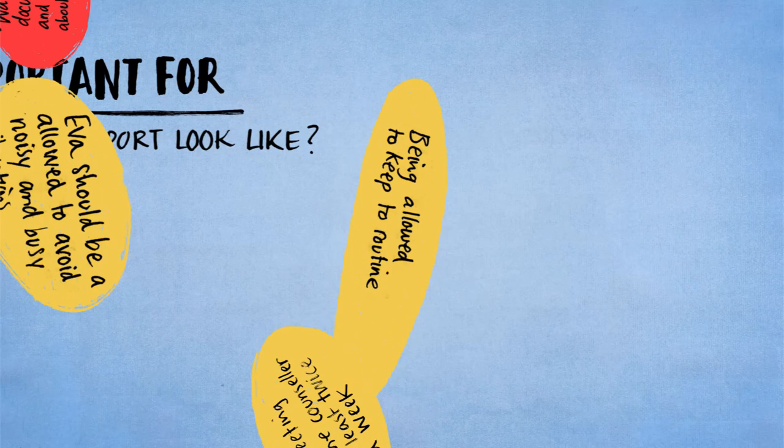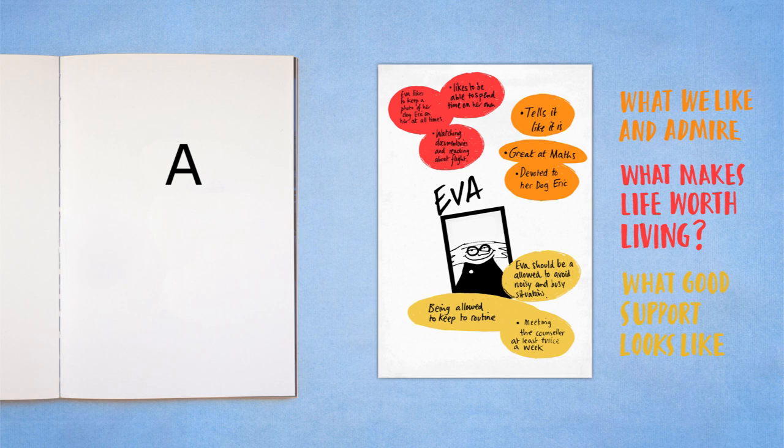This information can also be used to create a one-page profile which can be included in Section A or simply be kept with the EHCP. A one-page profile is literally a sheet of A4, handwritten or produced on the computer with a photo or picture in three parts: what we like and admire, what makes life worth living and what good support looks like.